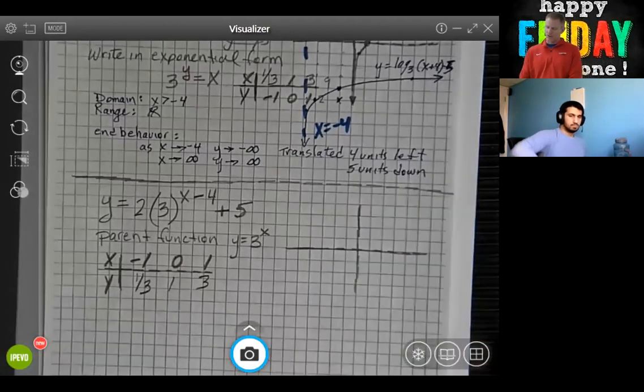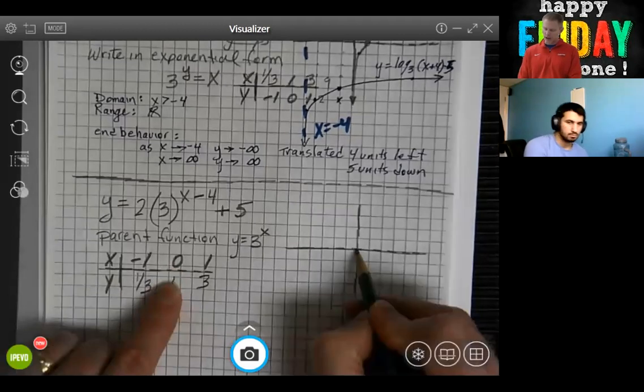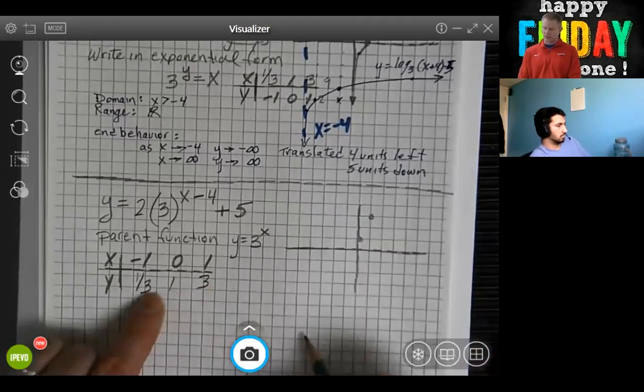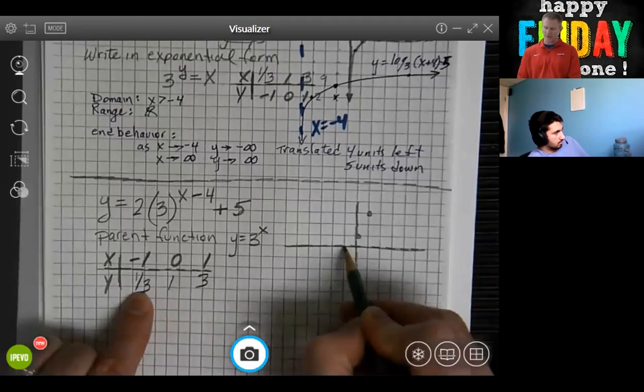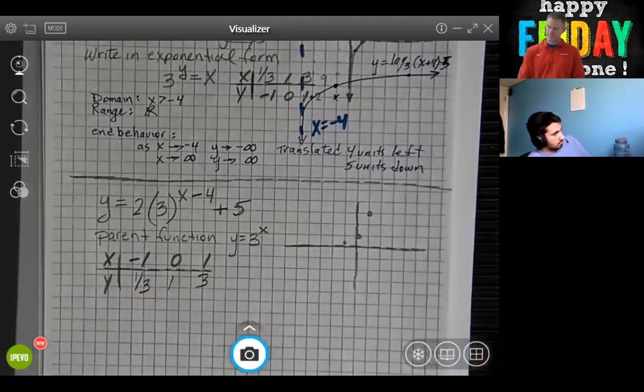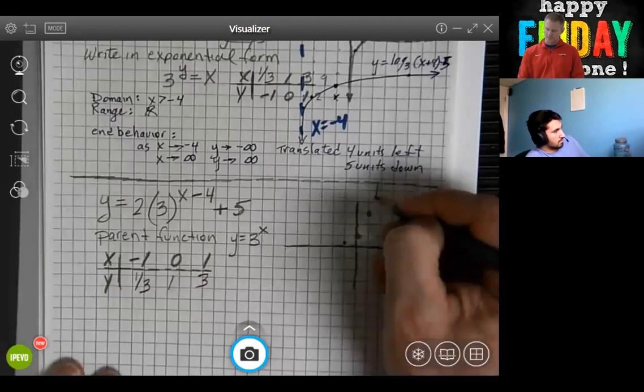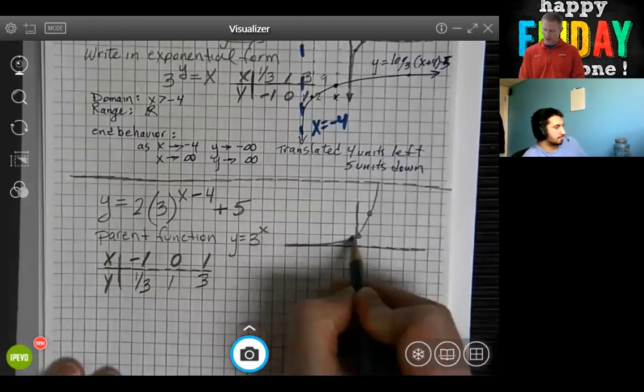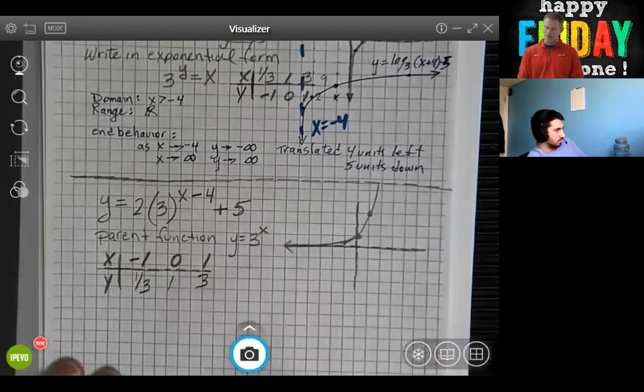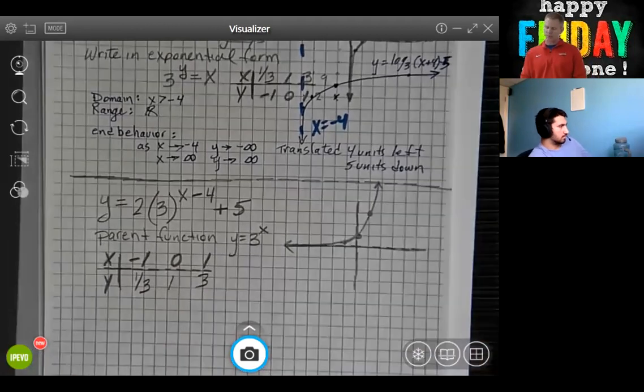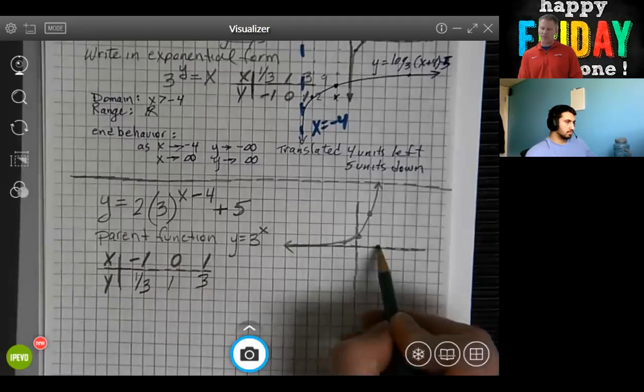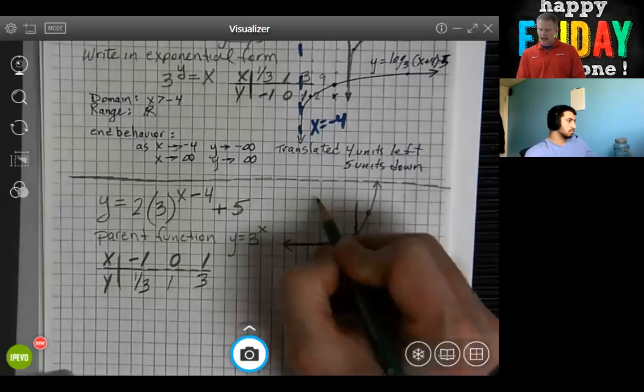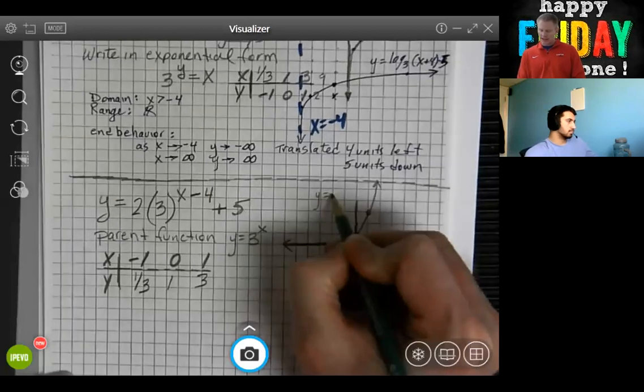So we have our graph. When x is 0, y was 1. When x was 1, y was 3. When x was negative 1, we were up at 1 third. We get closer and closer to that 0 value, but we never hit 0. And the graph curves up. The next spot it would be is when x was 2, we'd be up at 9. So this is a graph y equals 3 to the x power.